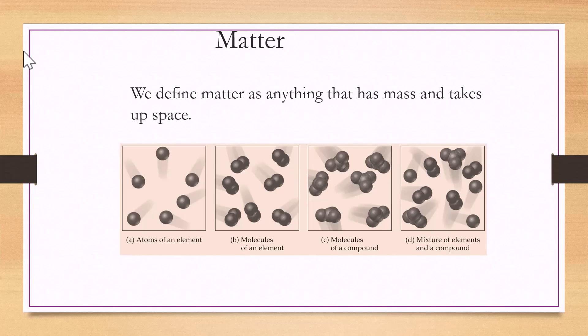With such a sweeping definition, chemists put matter into different categories with more meaningful and detailed descriptions. Some of these categories include atoms, elements, and compounds.